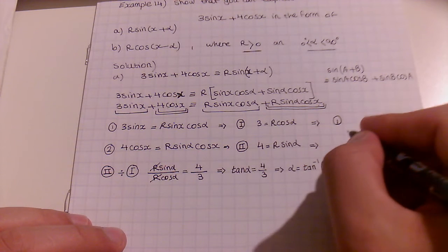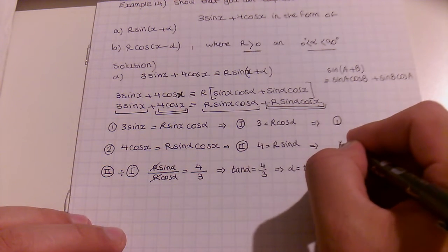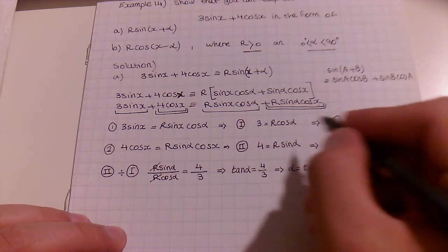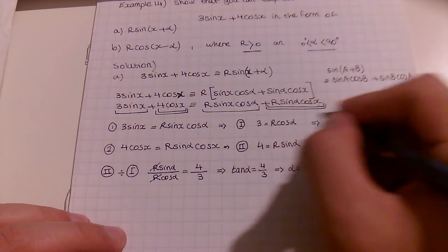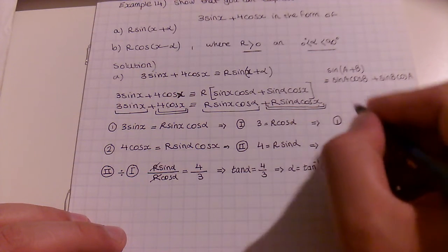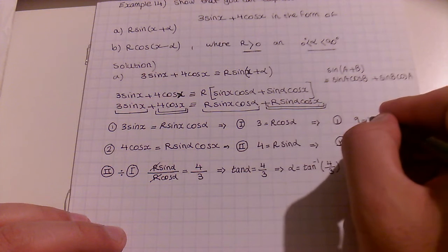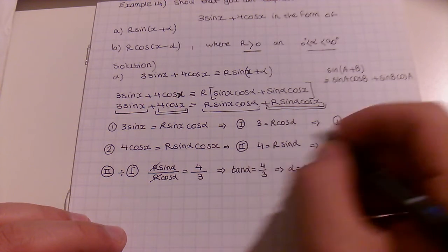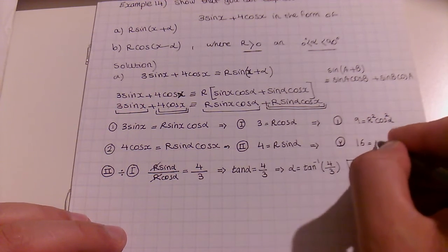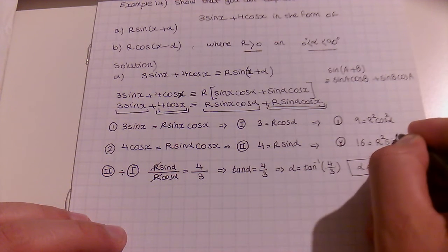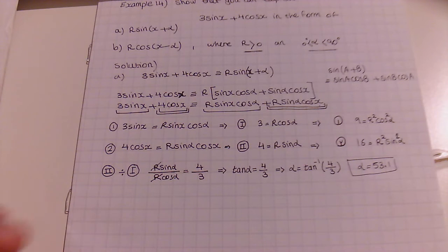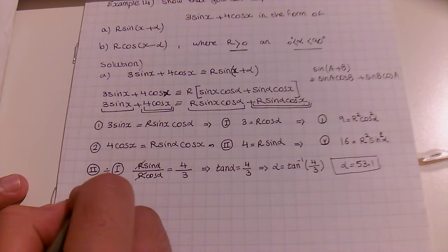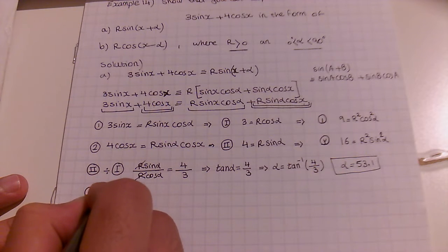Therefore, α equals tan⁻¹(4/3). Using my calculator, α equals 53.1 degrees. The question requires α to be between 0 and 90 degrees, so α equals 53.1 is acceptable and we keep this answer. If we had a negative value, we would know how to find the next angle for tan.